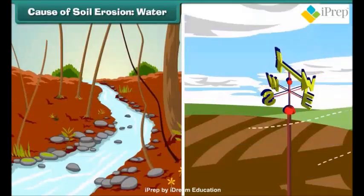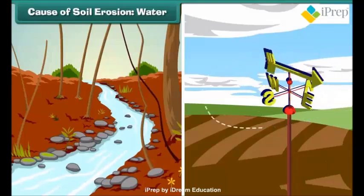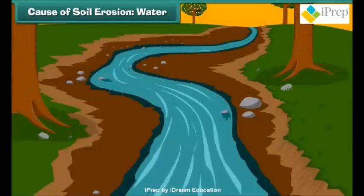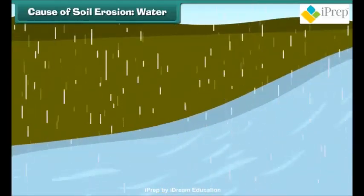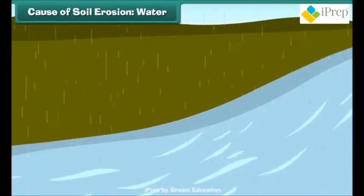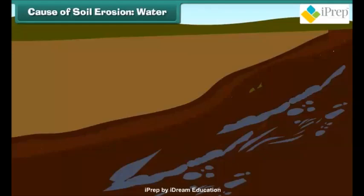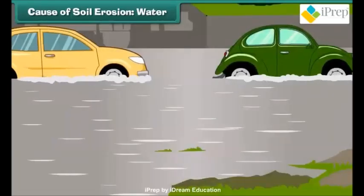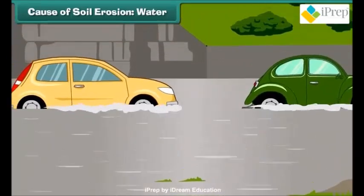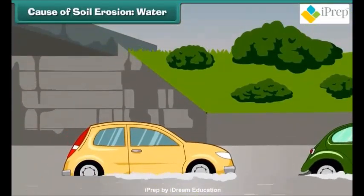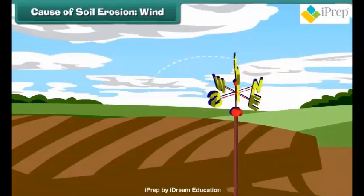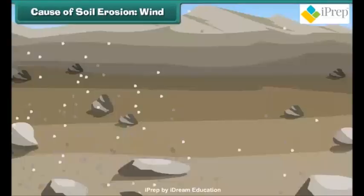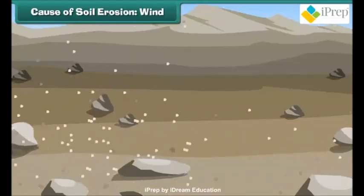Let us know the factors which cause soil erosion. The most common factors are water and wind movements. Water flowing through the ground carries away soil with it. During rain, the soil particles are detached by raindrops and carried away by running water. Floods are also a main cause behind soil erosion.